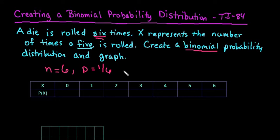The probability of failure is needed if you are using the formula, but if you are using your graphing calculator to help you, you won't need the formula. So I would just do one minus p to get the probability of failure, which happens to be five-sixths.